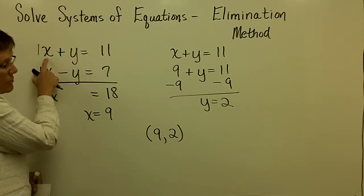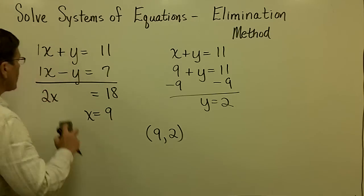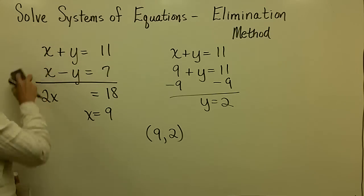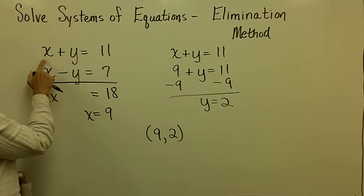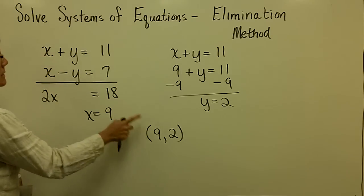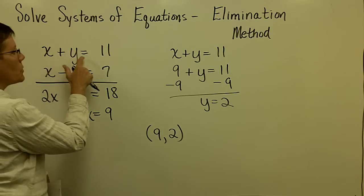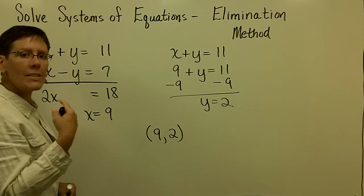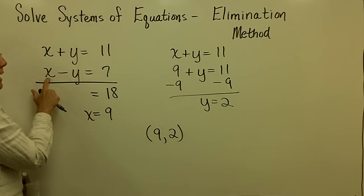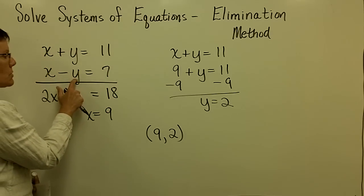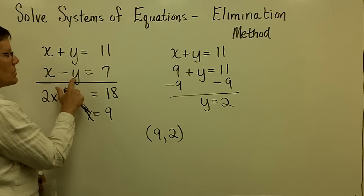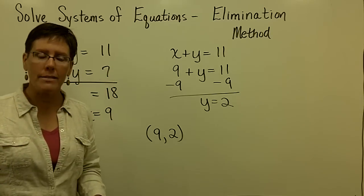It's pretty easy to check this one. Matter of fact, both of them are pretty easy. I'm going to get rid of these ones so you don't have to look at them. There's the two original equations. If x is 9 and y is 2, does 9 plus 2 add to be 11? And it does. If x is 9 and y is 2, is 9 minus 2 equal to 7? And it is.